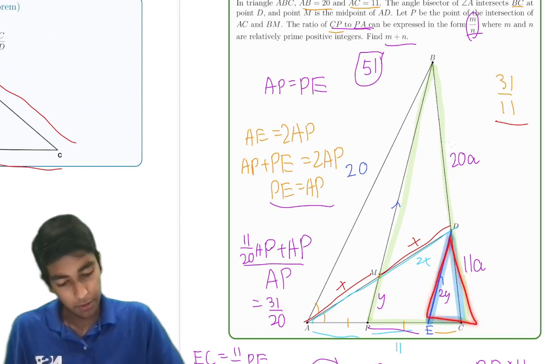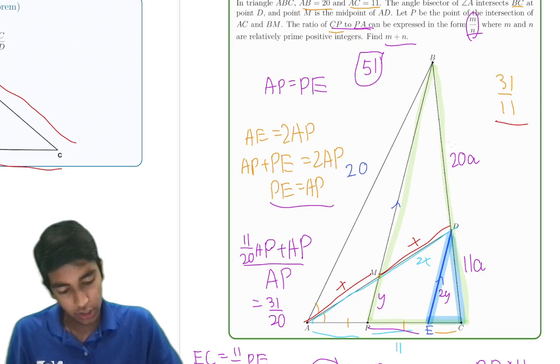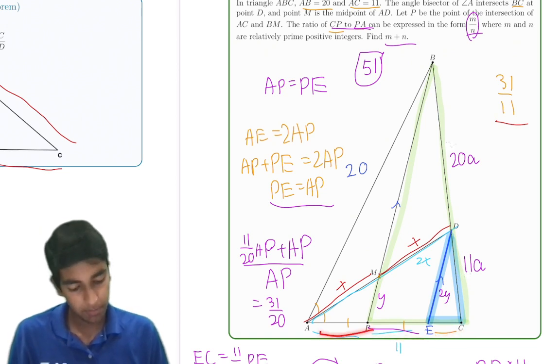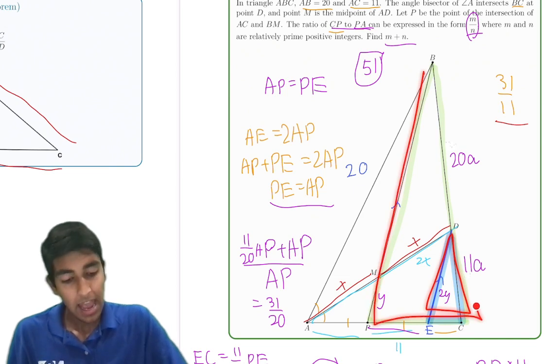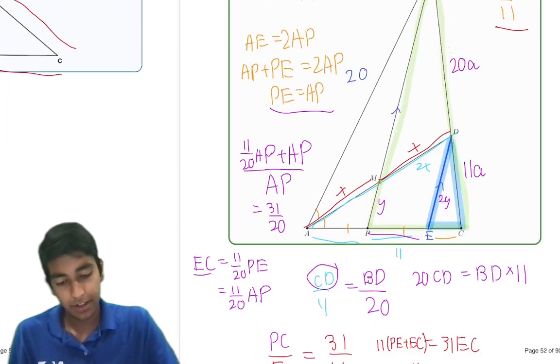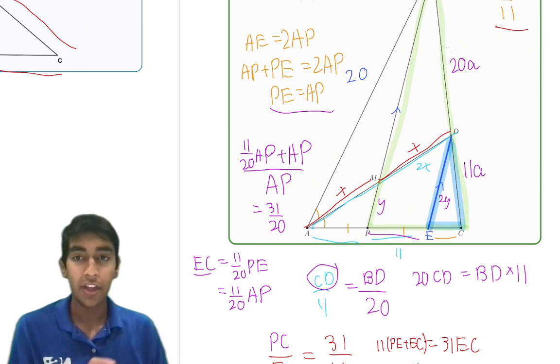And we also can use this pair of similar triangles over here. So then what we did is we found the ratio CP to PA. But CP is just CE plus EP, and PA is just PA. And then we know that PE equals PA by the first pair of similar triangles, and we know EC to PE by the second pair of similar triangles. And then we combined all of that and solved for the answer. A great use of angle bisector theorem along with similar triangles.